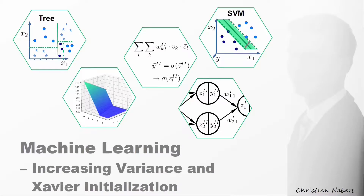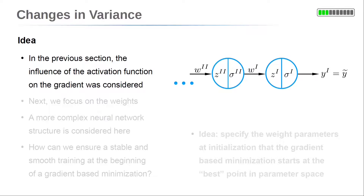Hi everyone, I'm Chris and welcome back to this machine learning course. In this section we will consider the increasing variance across deep neural networks. In the previous section we considered neurons in a row as a simple example for a deep neural network. We learned about the influence of the weights and activation functions on the gradients, and focused on the selection of the activation function. In this section we will take a look at the weight parameters.